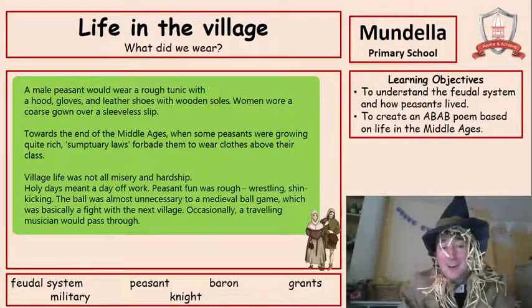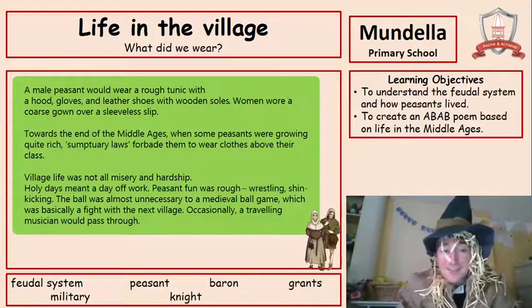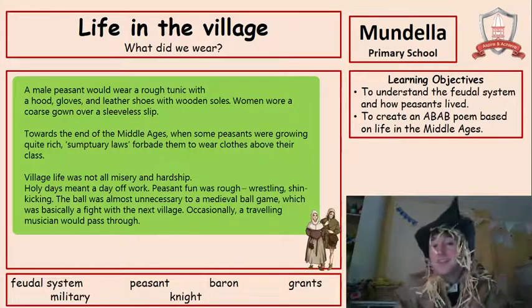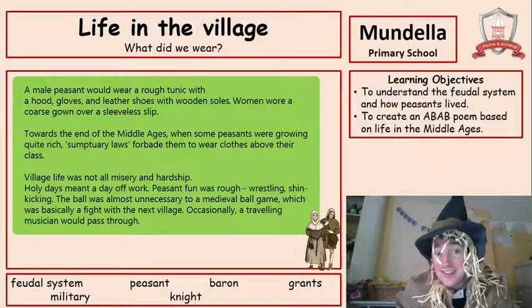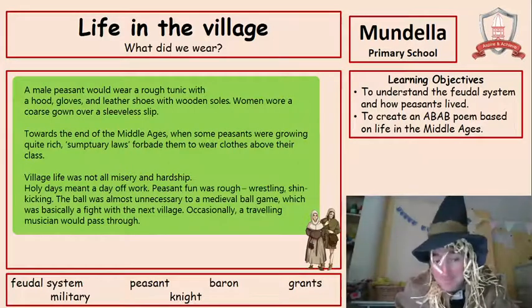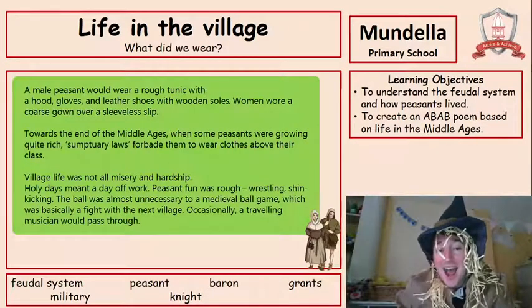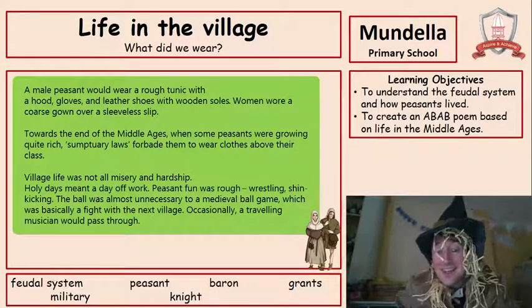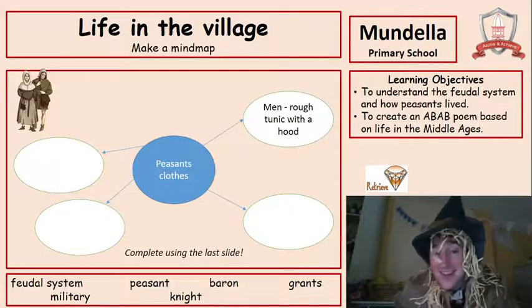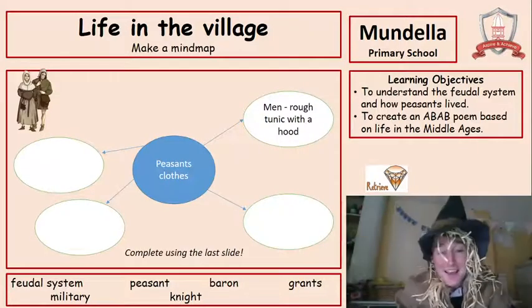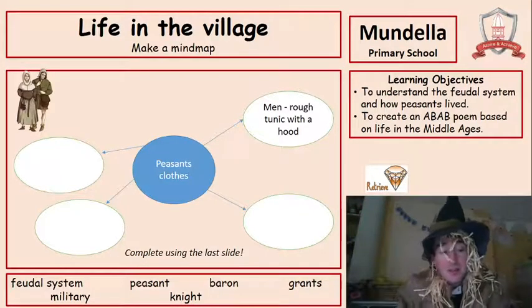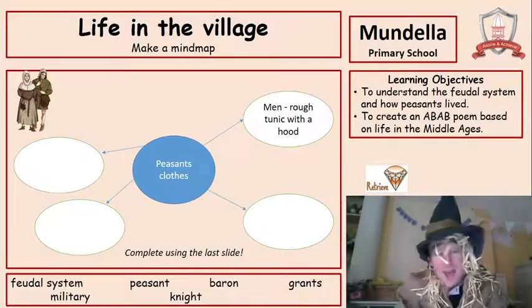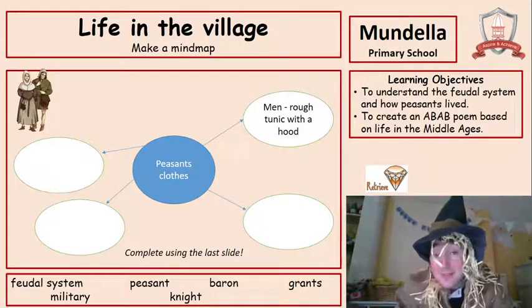What did we wear? We'd wear a rough tunic. Have a look at all of this about what we would wear — read it through and pause the video. Now we're going to make a mind map about peasants' clothes: men wore a rough tunic with a hood — fill in the rest with the different items. So now you should have three different mind maps covering our food, our clothes, and where we used to live.